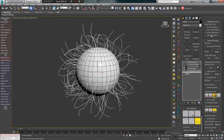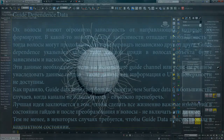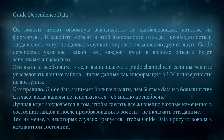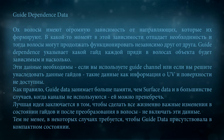Next is Guide Dependence. Let's understand what this option is for. Ornatrix hair has a huge dependence on the guides that form it. At some point this dependence is no longer needed and the hair can continue to function independently. Guide Dependence specifies which guide each strand in the hair object depends on, and to what degree. This data is necessary if you use Guide Channel or if you decide to inherit guide data, such as UV coordinates and surface information, which will not otherwise be available. Generally, Guide Data takes up more memory than Surface Data, and in most cases when channels are not used, it can be disregarded.